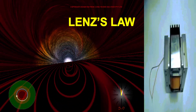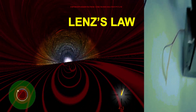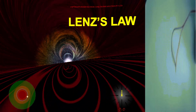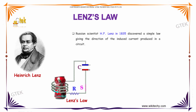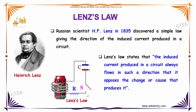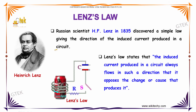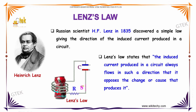Let's talk about Lenz's Law. Here is the greatest physicist and scientist, Mr. Heinrich Lenz. In 1835, he discovered a simple law giving the direction of the induced current produced in a circuit.